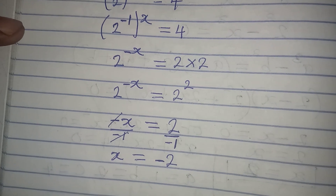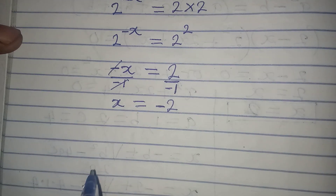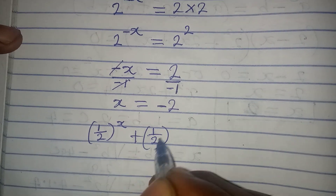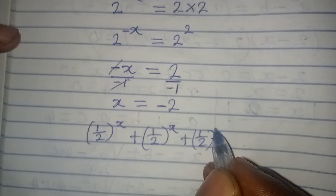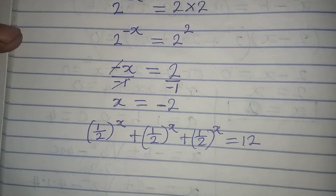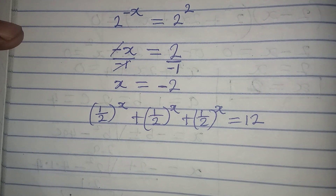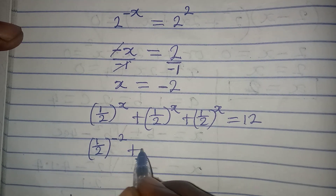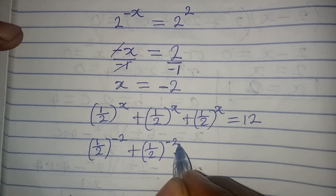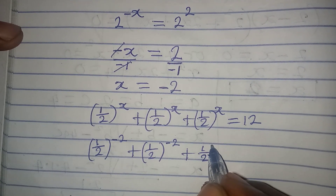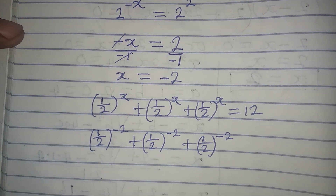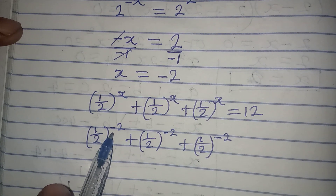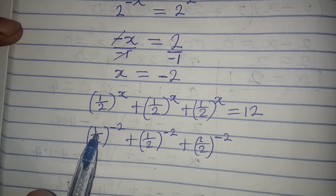Let's go back into the equation and verify. We have 1 over 2 to the power of X, plus 1 over 2 to the power of X, plus 1 over 2 to the power of X, equal to 12. With X equal to negative 2, we substitute: 1 over 2 to the power of negative 2, plus 1 over 2 to the power of negative 2, plus 1 over 2 to the power of negative 2. To remove the negative exponent, we flip the fraction.